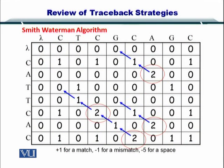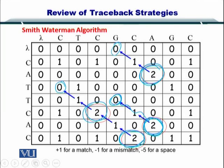Next we looked at the local alignments. The traceback strategy for local alignments was to select the highest elements within the alignment matrix, and then trace them back until we reached a zero. As you can see, in each case we reached the zero and stopped the traceback right there.